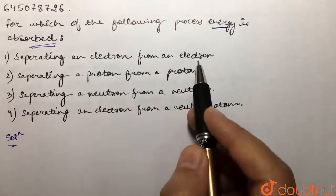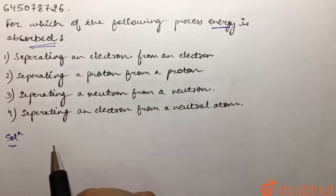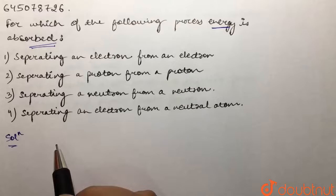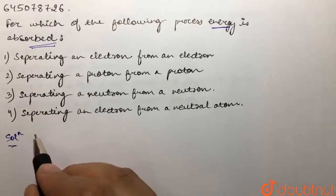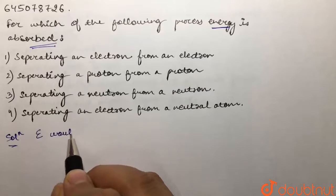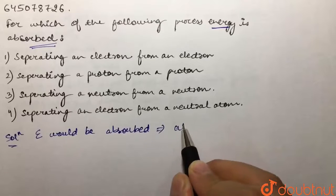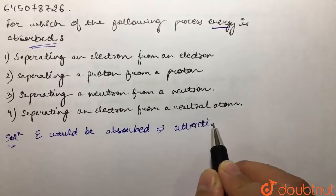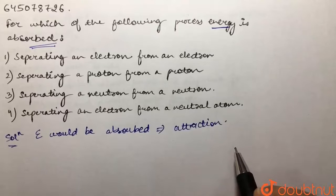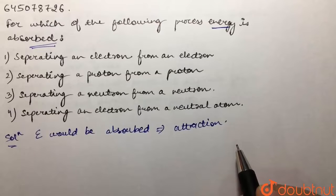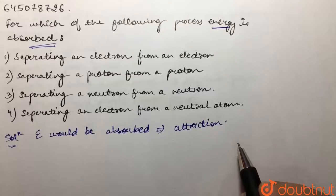Energy would be absorbed whenever there would be attraction between two species. Whereas in case of repulsion there would be no energy requirement, because with the force of attraction between two species we would require energy to separate them.